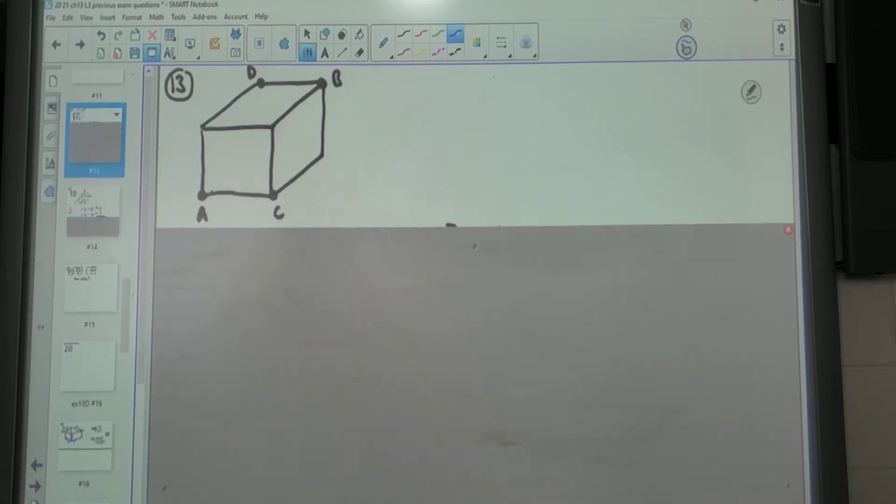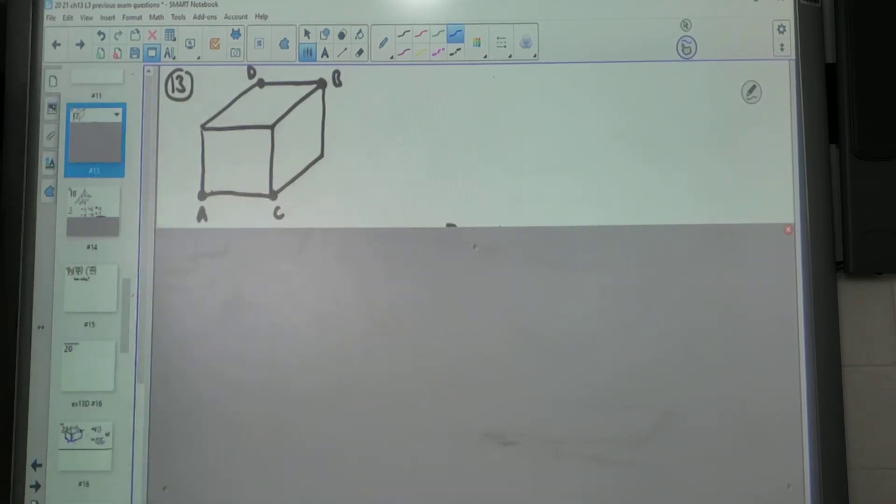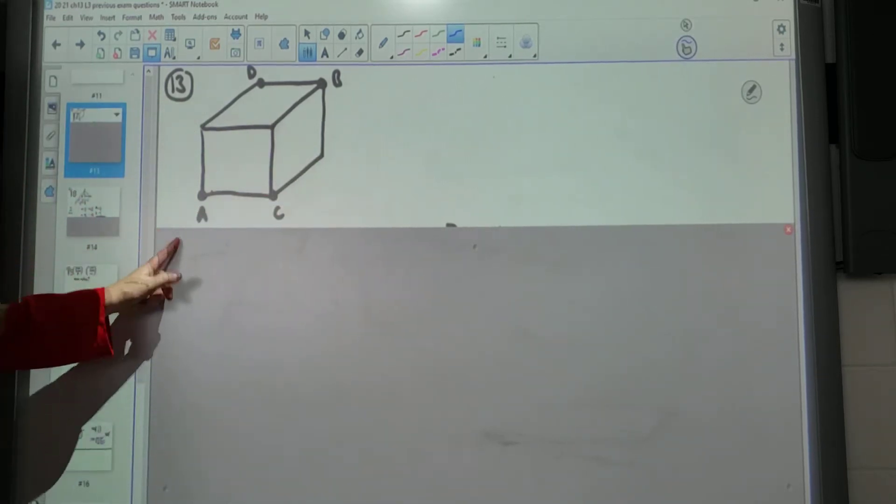They haven't told us how big the cube is and they haven't given us any directions for which I, J and K is. So we've got a lot of decisions to make. Also I could have picked these two points here as well because they're also diagonals on this cube. So I had a few things to decide on this question.